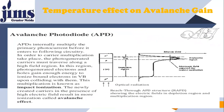APDs internally multiply the primary photocurrent before it enters the following circuitry. In order for carrier multiplication to take place, the photogenerated carriers must traverse a high-field region. In this region, the photogenerated electrons and holes gain enough energy to ionize bound electrons in the valence band upon colliding with them. This multiplication is known as impact ionization. The newly created carriers in the presence of a high electric field result in more ionization, called the avalanche effect.